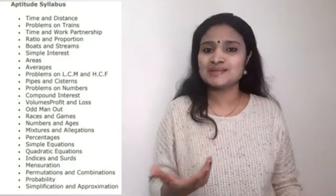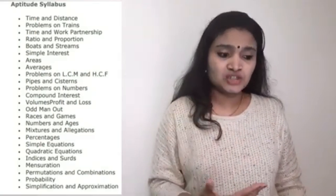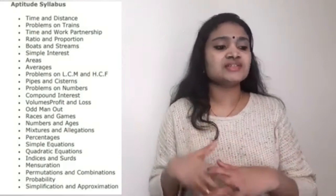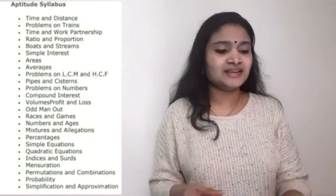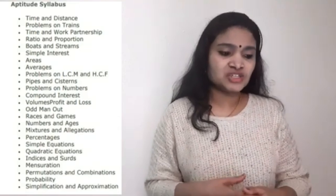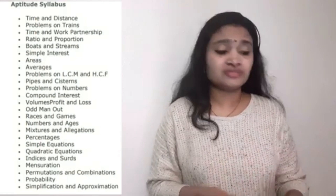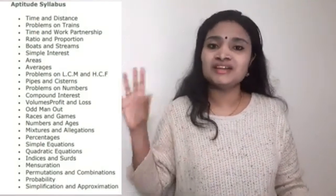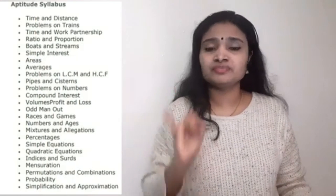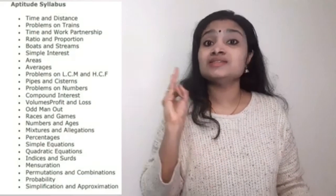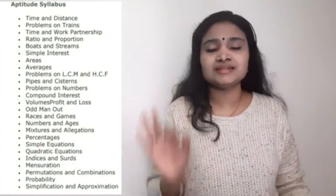From the aptitude section there are many important areas: time and distance, problems on trains, time and work, partnership, ratio and proportion, boats and streams, simple interest, compound interest, averages, LCM and HCF, volume, profit and loss, odd man out, races, mixtures and allegations, symbol equations, quadratic equations, permutation and combination, probability, simplification, and approximation. These three areas — reasoning, general awareness, and aptitude — together carry 50 marks.